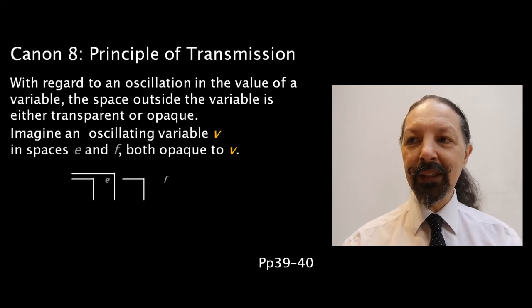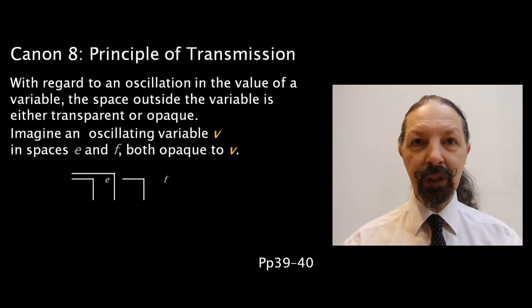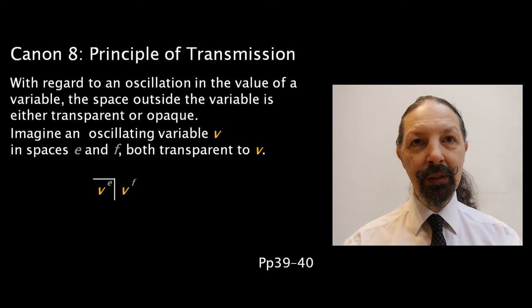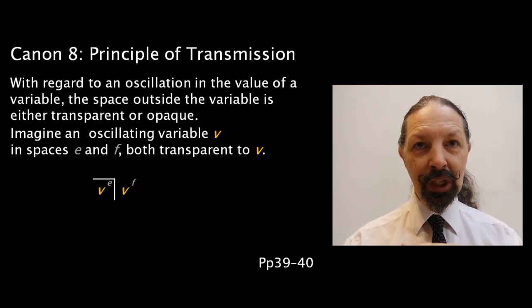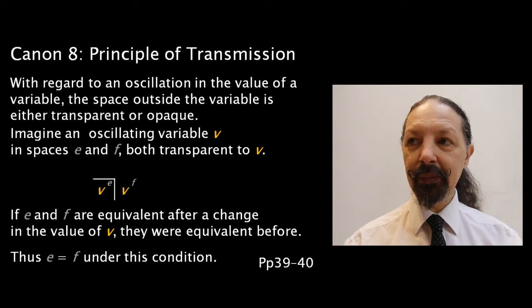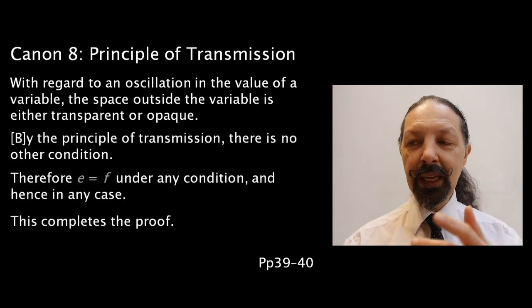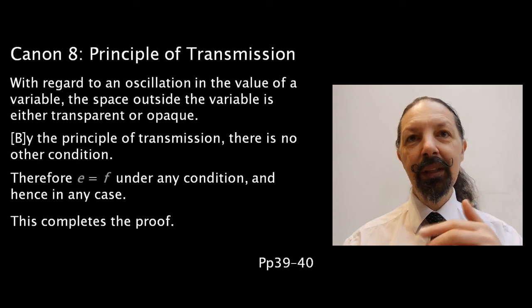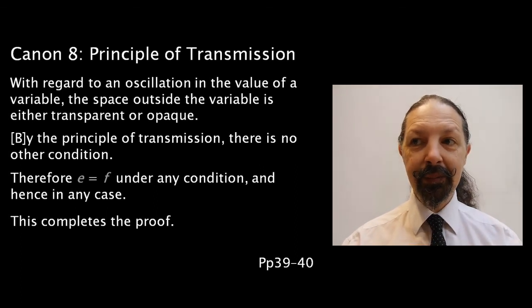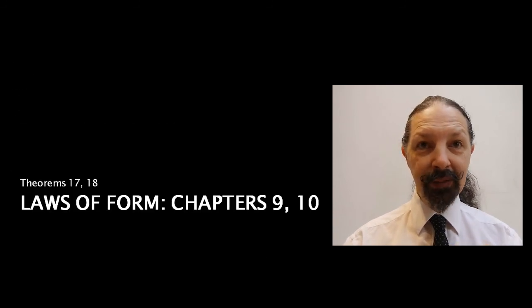Now, imagine an oscillating variable V in spaces E and F, both being opaque to V. So you could have this oscillating variable anywhere. You just don't see it. Now, if there's a change in V and E and F are still equivalent, then they were equivalent before. E equals F under this condition. Now, imagine that you have this oscillating variable in spaces E and F. Both are transparent. If there's a change in V and both spaces are equivalent, then they would have been equivalent before the change. E equals F under this condition. So, E equals F under any condition, and hence in any case. This completes the proof. This allows him to introduce variables, oscillating variables, into a finite expression and play with that idea. And that's what we're going to start looking at in theorem 17 in our next session.